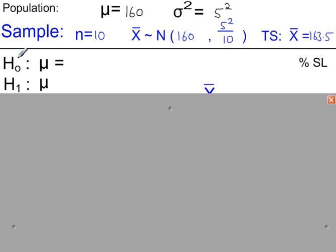So H₀, the null hypothesis, the population mean is 160. We're looking for an increase in the height of students. So H₁, the alternative hypothesis, the population mean is more than 160.